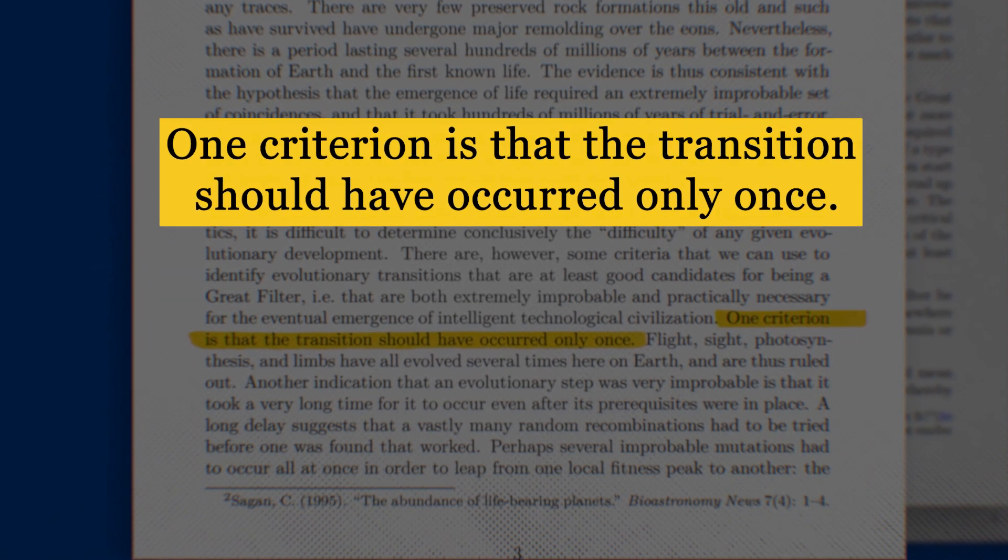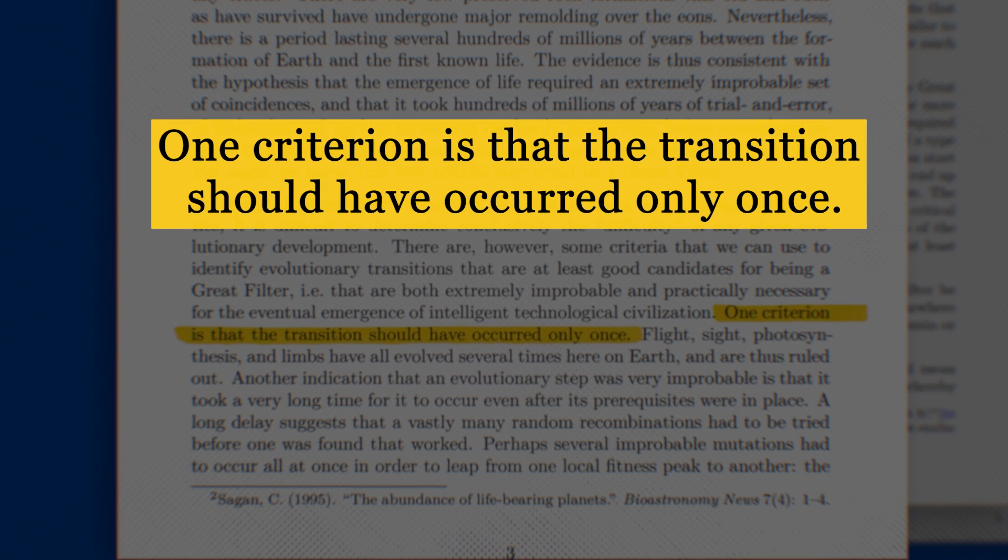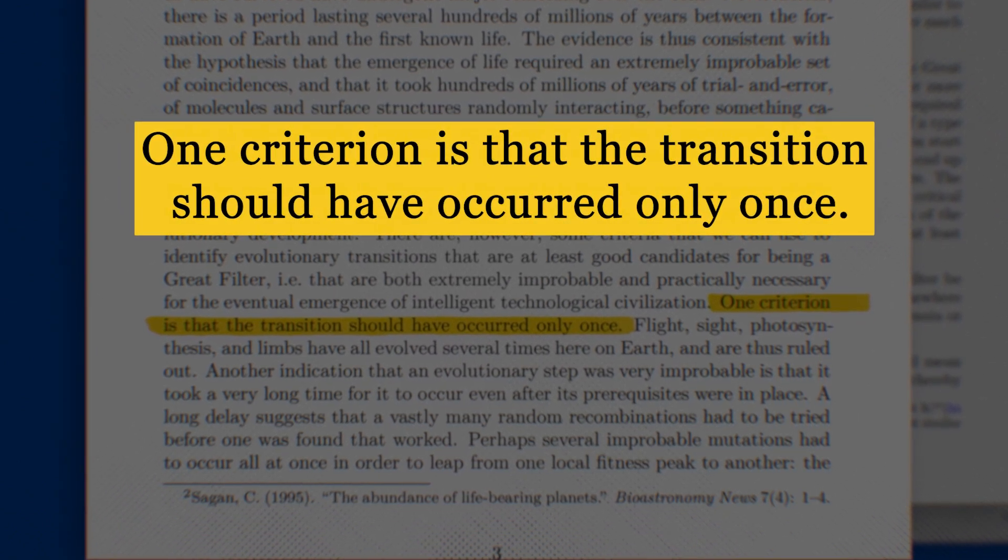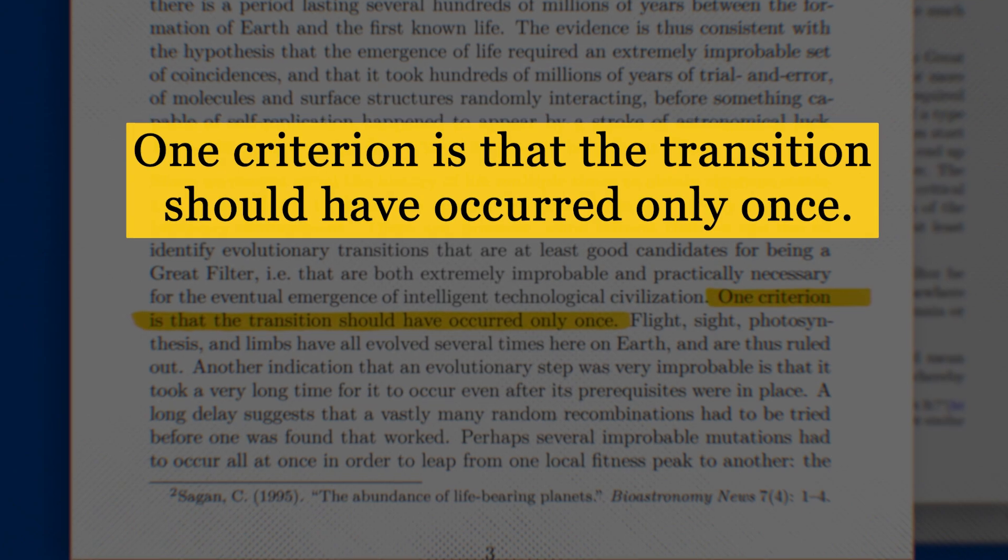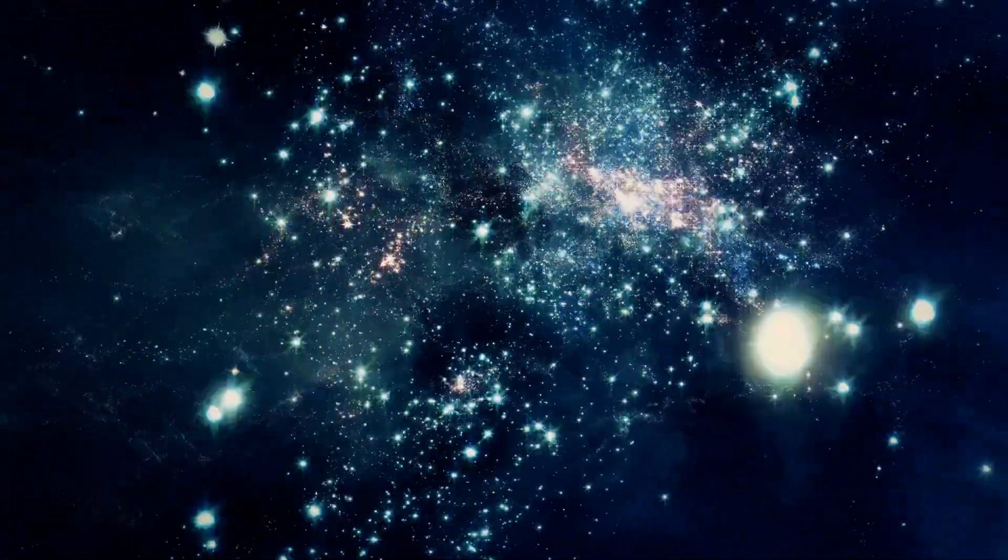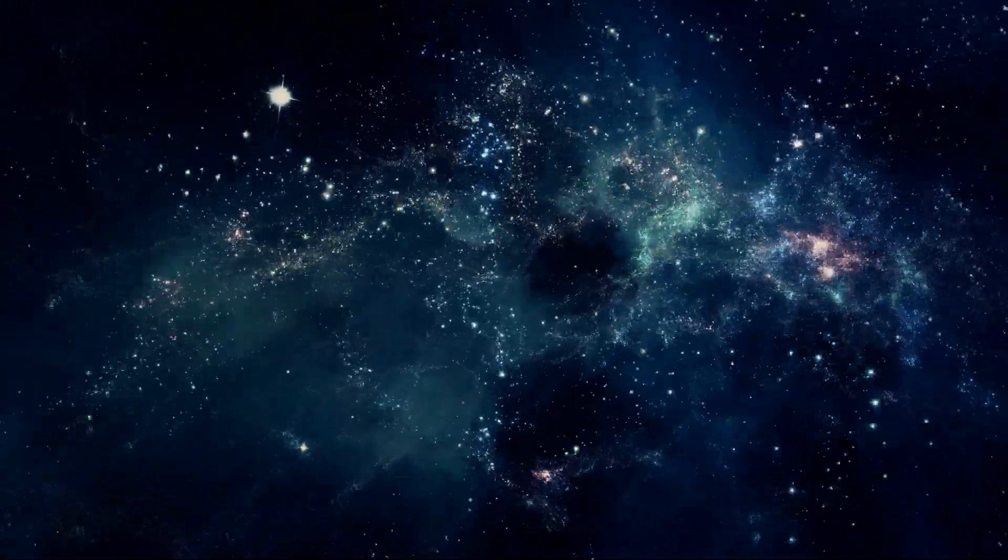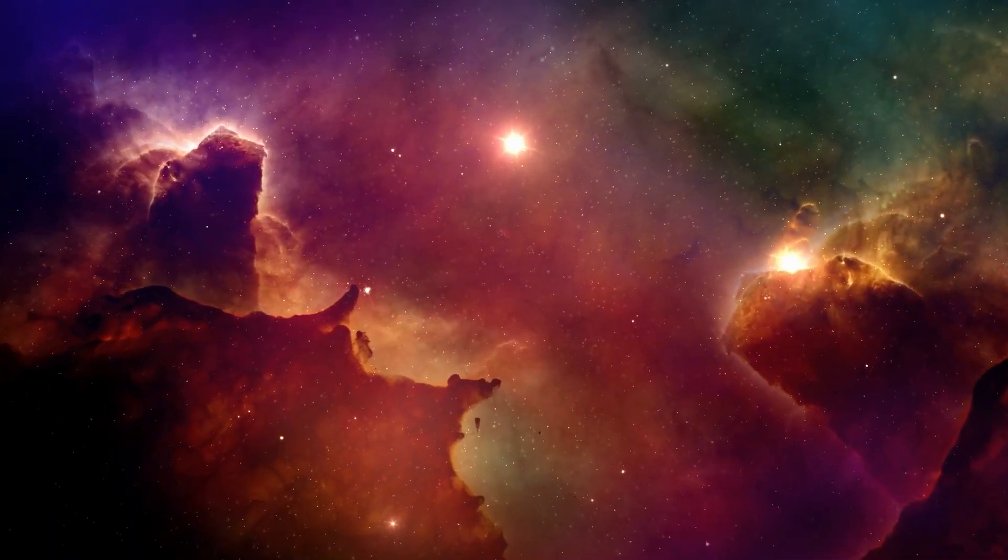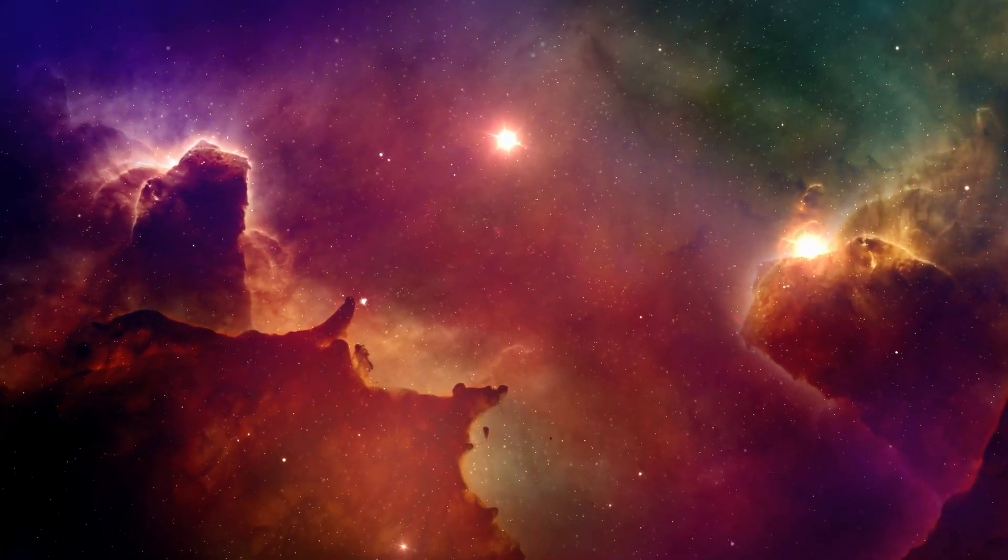The first criterion is that this event can only have happened once in history. And to understand this condition, we must not forget our main goal, which is to find events that are extremely unlikely, almost impossible. It makes sense that if an event is extremely unlikely, then it should only happen once during the history of the evolution of life.